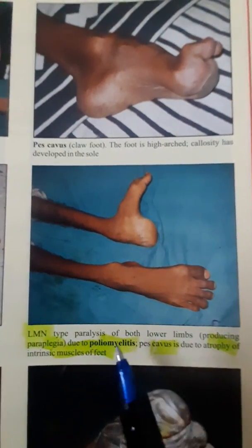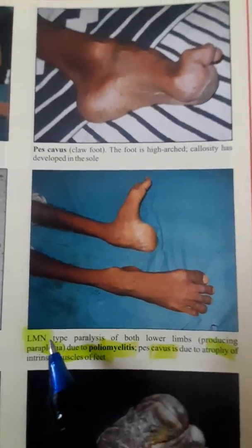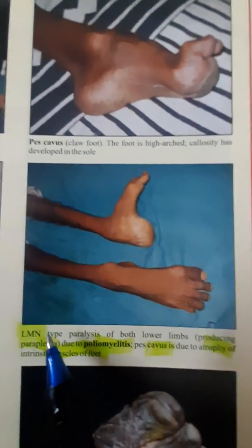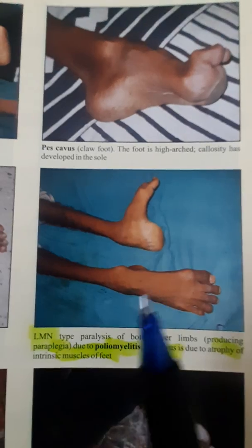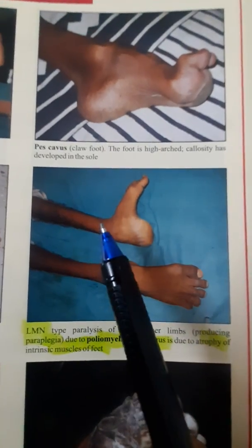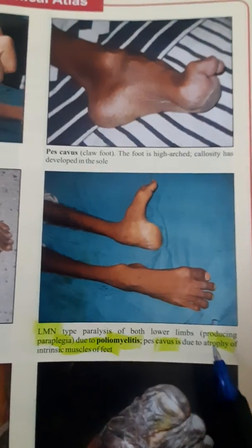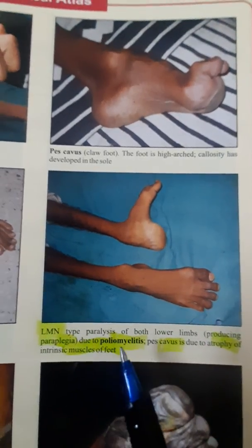Now this is a picture from a poliomyelitis case. The poliovirus infects the anterior horn cell, causing a lower motor neuron lesion. Features of lower motor neuron palsy include flaccid paralysis, atrophy, and fasciculations. As you can see, the muscle bulk is compromised — a very thin leg — with atrophy of the intrinsic muscles of the feet, as labeled here.